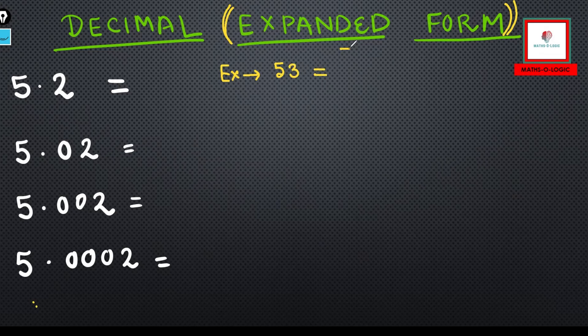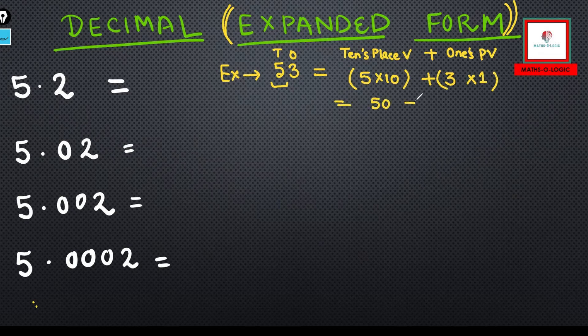I'm going to write the tens place value here, then the ones place value. First of all, I'm going to write for this five there are five tens, so it means 5×10. Then three ones, so 3×1. If you're going to solve this, you will get 50+3, and this is the expanded form.